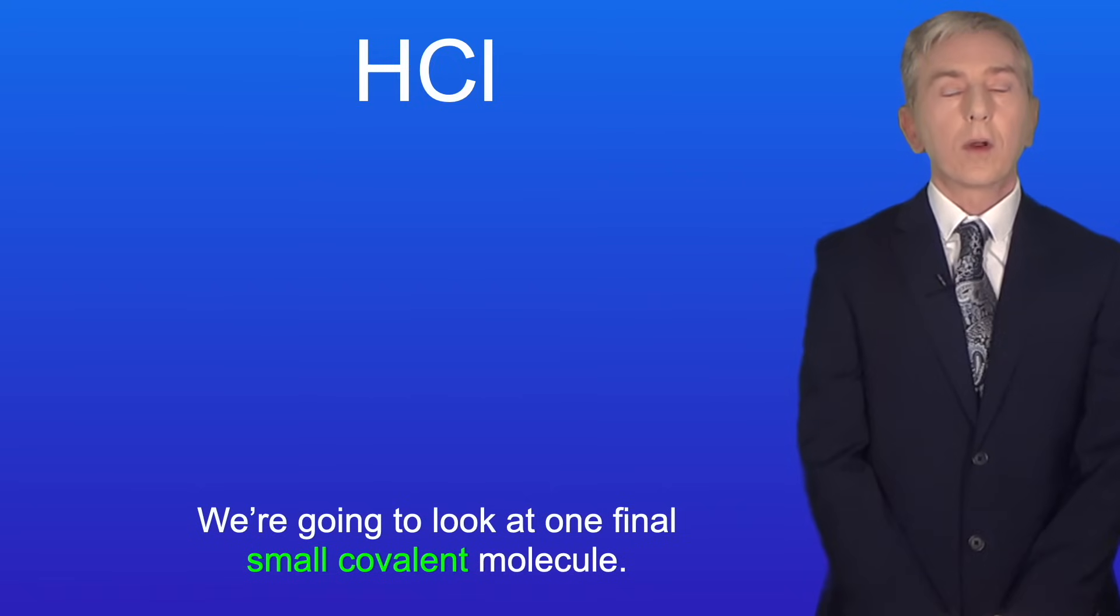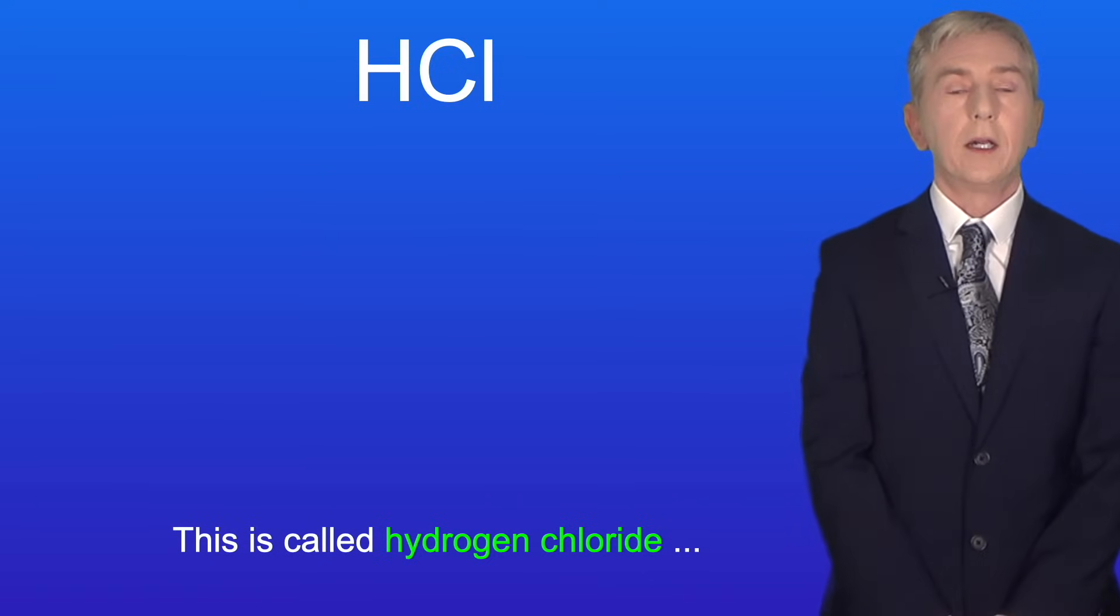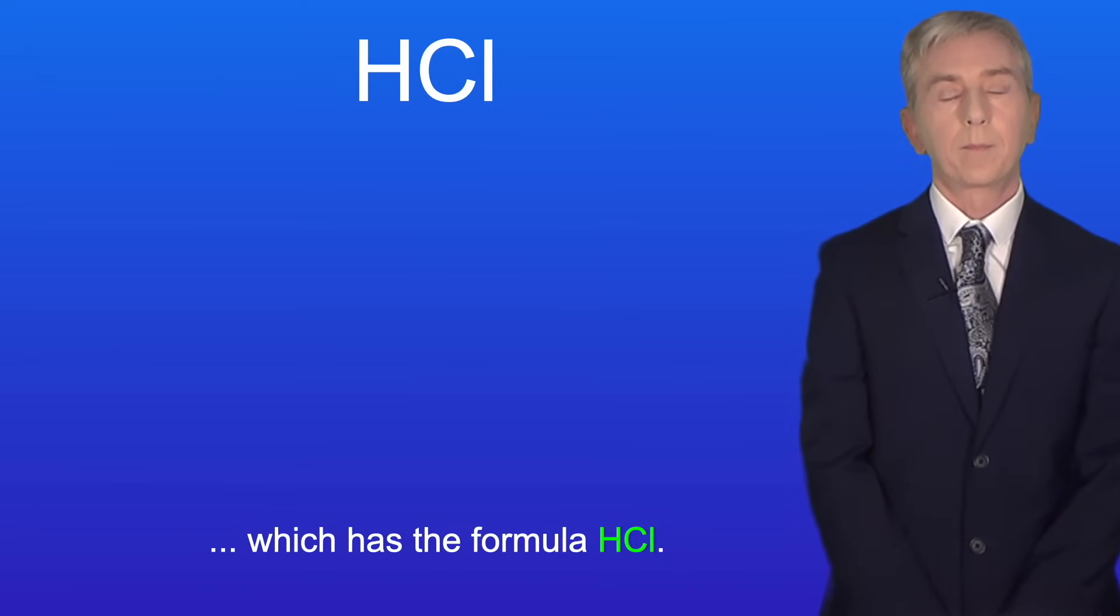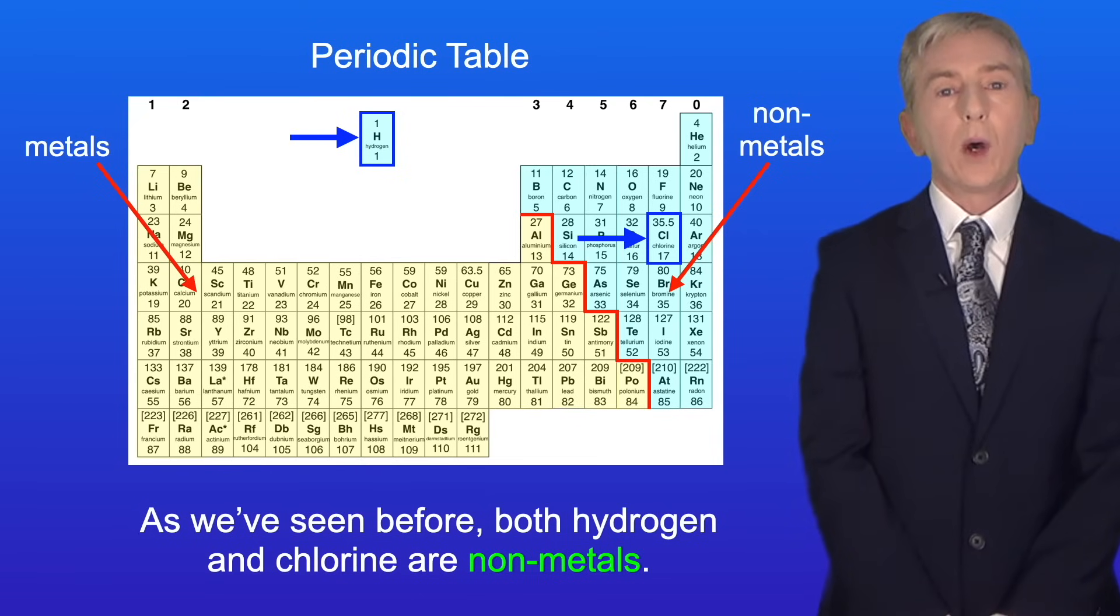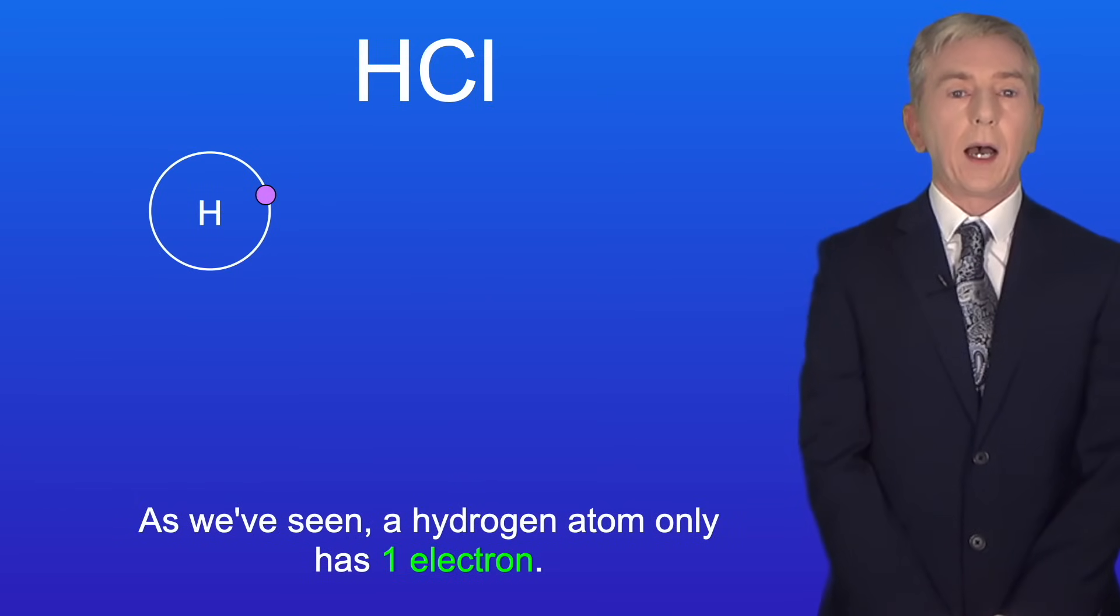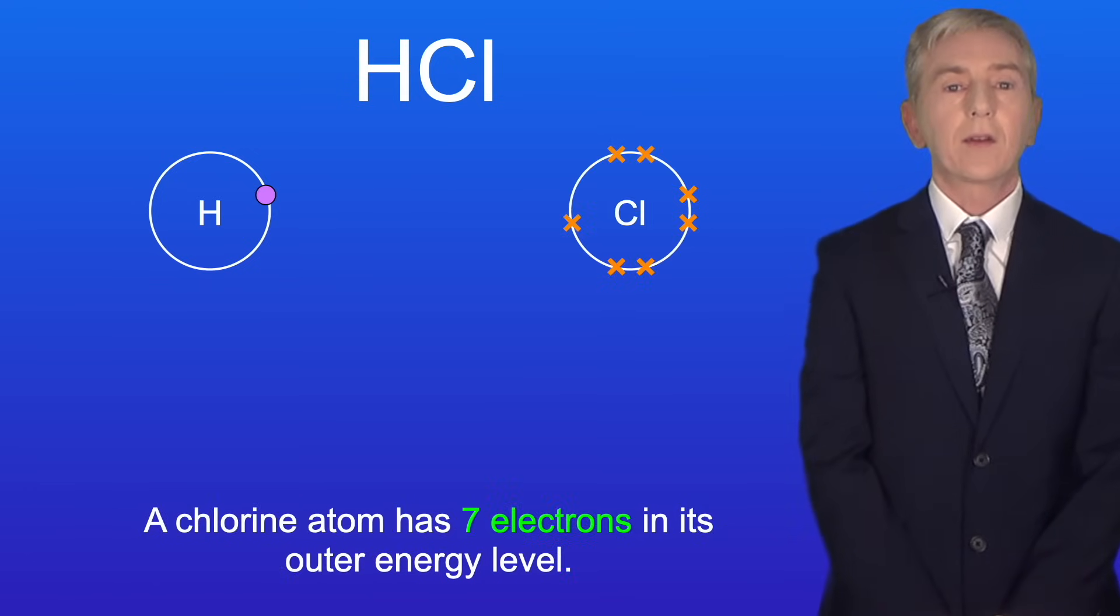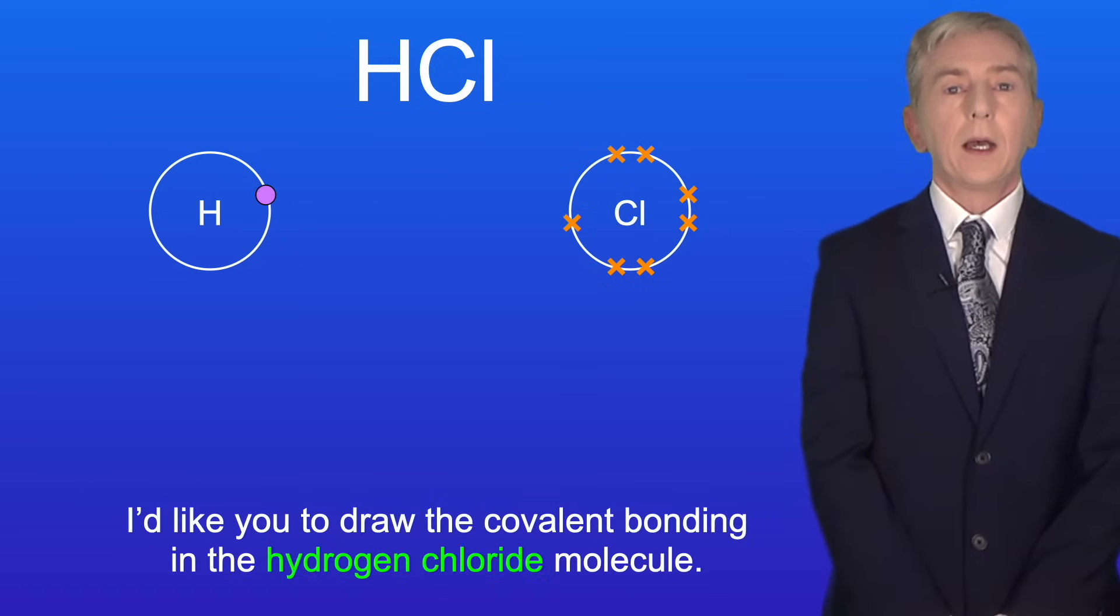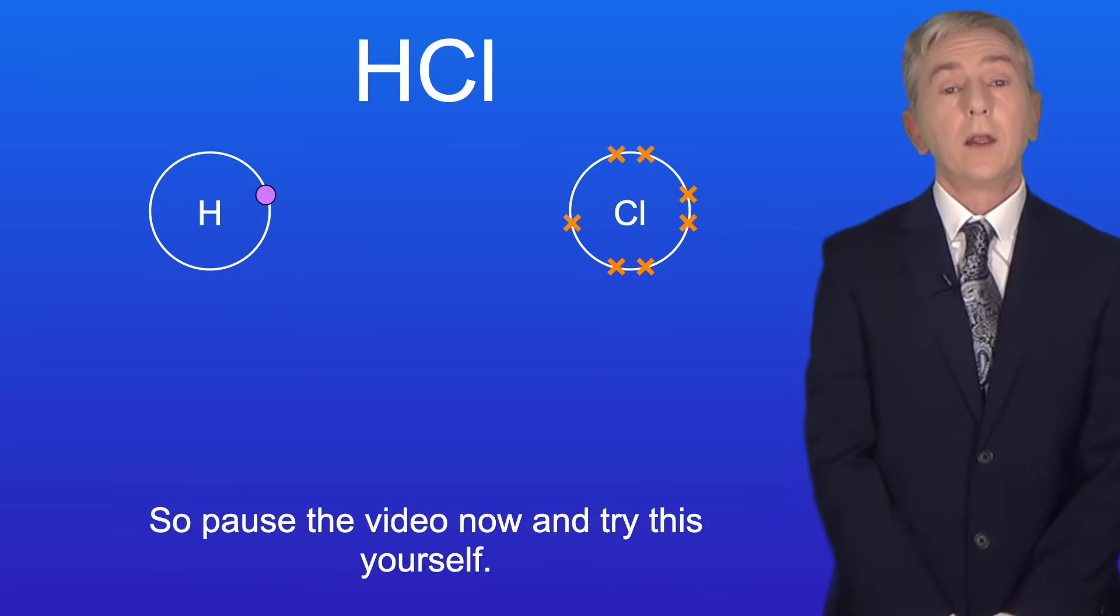Okay we're going to look at one final small covalent molecule. This is called hydrogen chloride, which has the formula HCl. As we've seen before, both hydrogen and chlorine are non-metals, so hydrogen chloride is a covalent molecule. As we've seen, a hydrogen atom only has one electron. A chlorine atom has 7 electrons in its outer energy level. I'd like you to draw the covalent bonding in the hydrogen chloride molecule, so pause the video now and try this yourself.